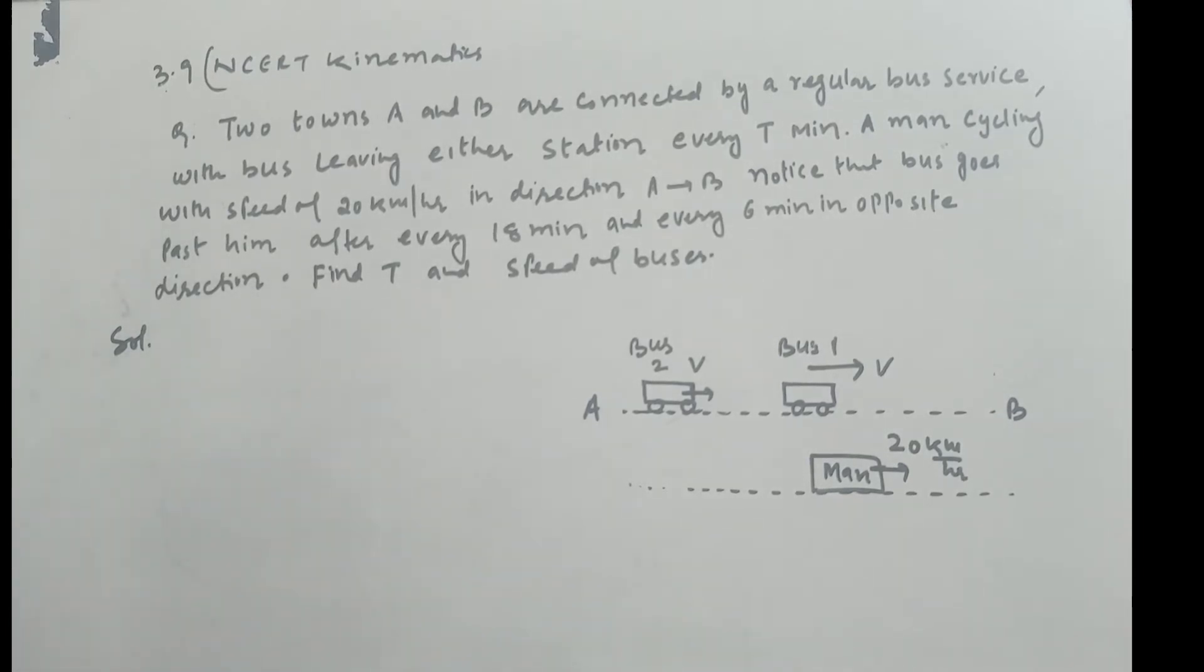So let me draw a small diagram. This is town A, town B. Buses are going from A to B, similarly buses are going from B to A. There is a man cycling from A to B with a specified speed of 20 km per hour.